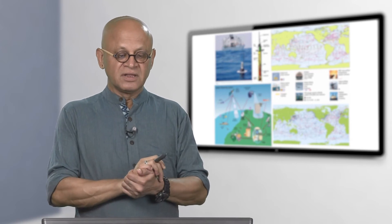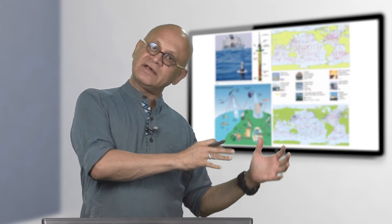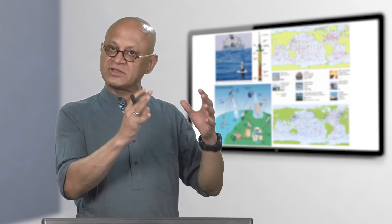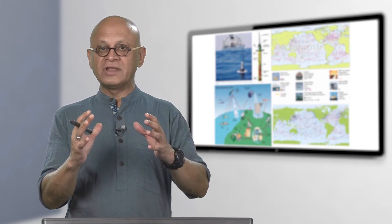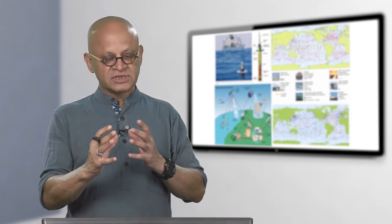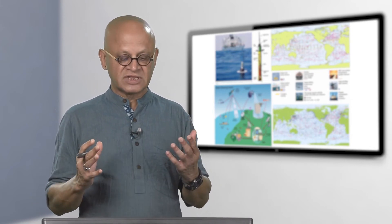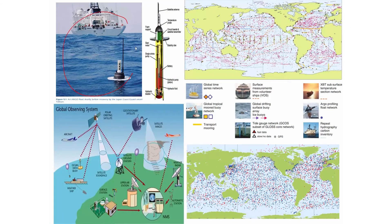Let us start looking at the impacts. We have been looking at paleo data and some historic data, and now we are relying more and more on instrumental records. I will give a sampling of the various data sources. The ocean is now pretty much covered — there is a global time series network where some things are moored in the ocean and they stay there for a long time, continuously recording temperature, salinity, currents, winds, and sometimes oxygen, chlorophyll, light, and so on.